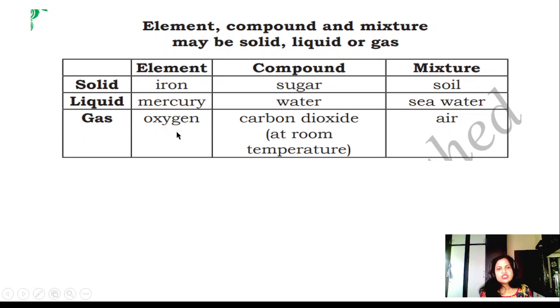Gas: oxygen is an element. Carbon dioxide is a compound which is in the gas form. Air is a mixture of all the different gases - oxygen, carbon dioxide, hydrogen, and many things are there in the air.